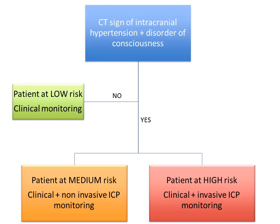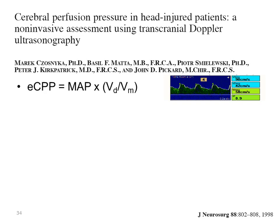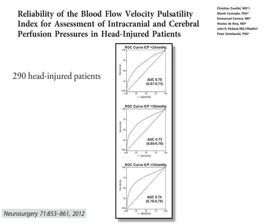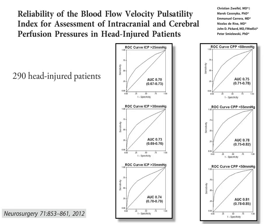If you have a positive CT scan and the patient with disorder of consciousness is in coma, and you have to define the risk — for example, the hepatic patient with high risk for bleeding — the patient probably needs non-invasive monitoring. Didier already talked about the possibility to calculate CPP and ICP with transcranial Doppler, but if you look at large series, the precision of the system for ICP higher than 25, 30, or 35 is not so strong as we would like.